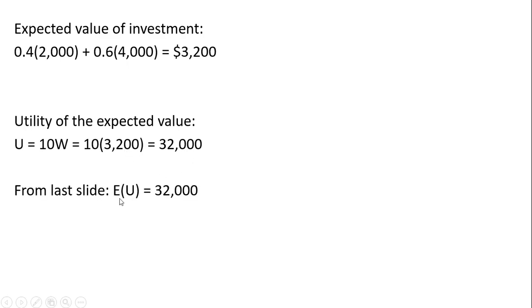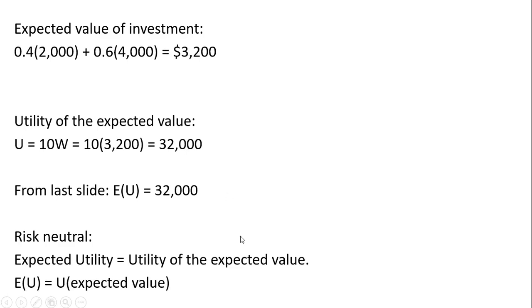From the previous calculation, we observed that the expected utility was 32,000. So for a risk-neutral person, expected utility equals the utility of the expected value. The wording can be confusing, but the utility of the expected value is just evaluating the utility function at the expected value of the investment. I hope you found this video helpful.